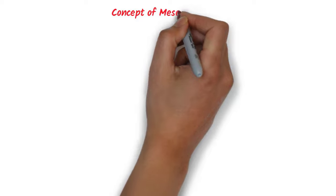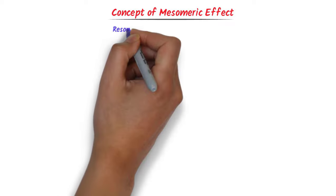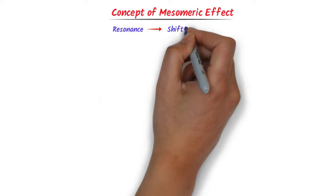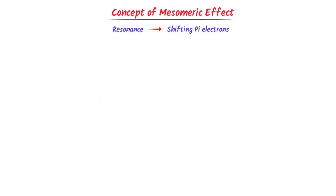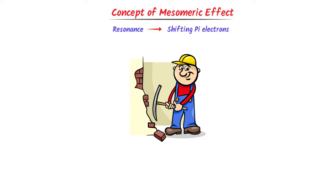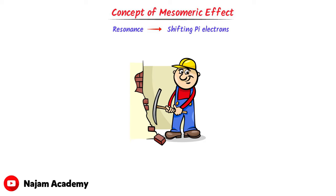Now let me teach you the basic concept of mesomeric effect. We already know that resonance is the possibility of shifting pi electrons. I will use the analogy of resonance which will make things super easy.